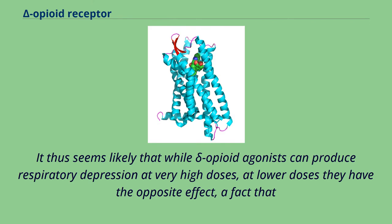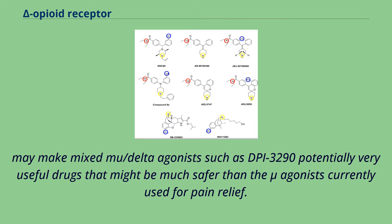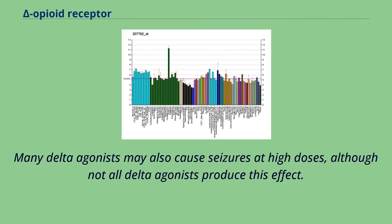It thus seems likely that while Delta Opioid agonists can produce respiratory depression at very high doses, at lower doses they have the opposite effect — a fact that may make mixed Mu/Delta agonists such as DPI-3290 potentially very useful drugs that might be much safer than the Mu agonists currently used for pain relief. Many Delta agonists may also cause seizures at high doses, although not all Delta agonists produce this effect.